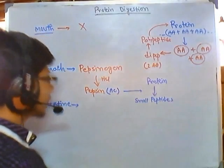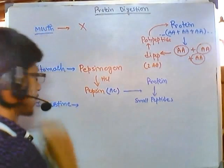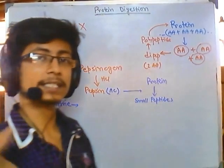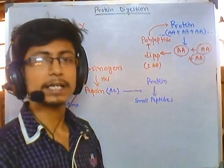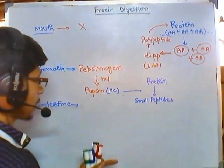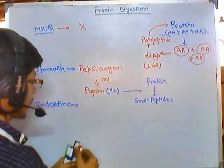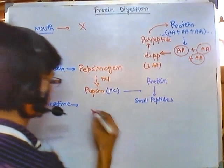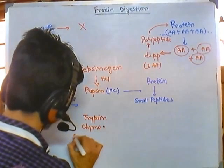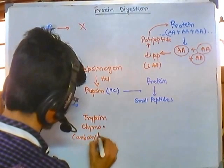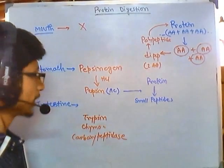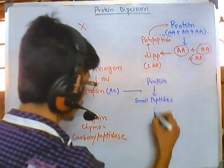The second round of protein digestion takes place in the intestine. In the intestine, the pancreas secretes protein-degrading enzymes: chymotrypsinogen, trypsinogen, and carboxypeptidase. These are activated by different hormones, ultimately producing trypsin, chymotrypsin, and carboxypeptidase. All of these enzymes then act on the small peptide fragments.